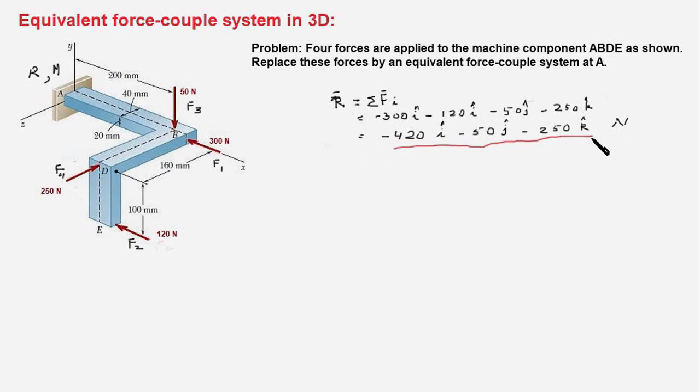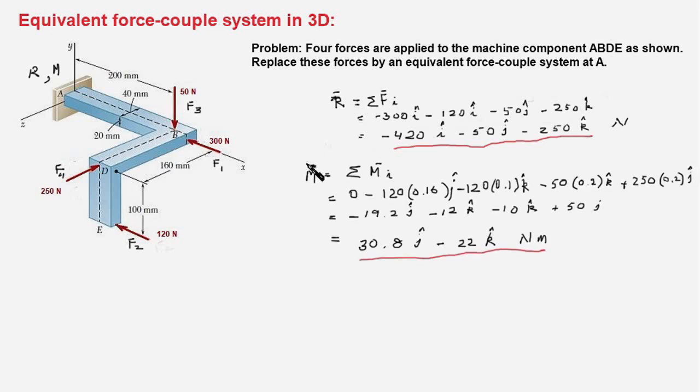Now, we have to compute the moment M. And to find out the moment, we are going to follow the scalar method instead of the vector method. M is sum of the individual moments. So, now examine the moment of each of the force about point A. F1, as you notice, is passing through point A and therefore has zero moment about A. So, F1 contributes no moment.